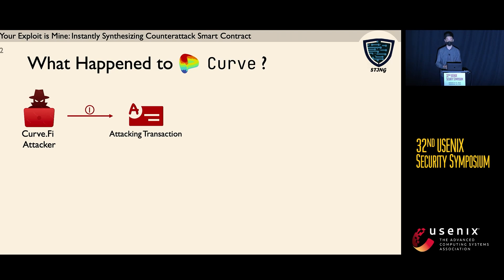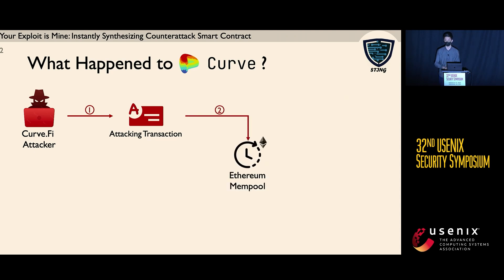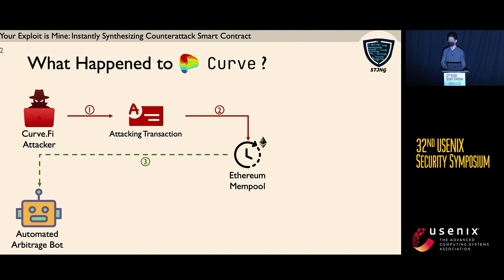A malicious user, or what we call an attacker, observed these vulnerabilities and immediately initiated an attacking transaction. However, due to the nature of the blockchain, before being finalized, any transaction will be pending in a publicly available pool, which we call the memory pool. This means at this point, although the attacking transaction has not taken effect, anybody can observe and locally emulate this transaction.